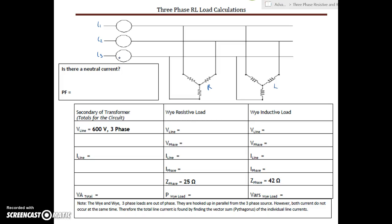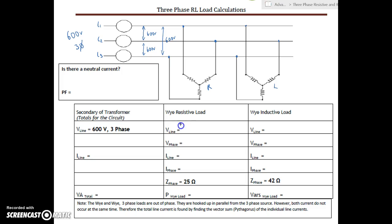This resistive load could be a three-phase resistive heater, and the inductive load could be a three-phase motor, Y-connected — maybe a heater and blower fan that are part of the same unit. We need to know the total current that unit will draw. First, we look at the incoming voltage: 600 volts three-phase, meaning 600 volts line-to-line. Those voltages appear across both the resistive and inductive Y loads, since they're in parallel.